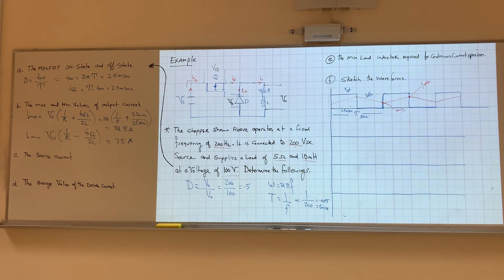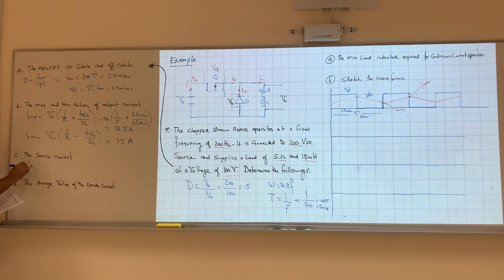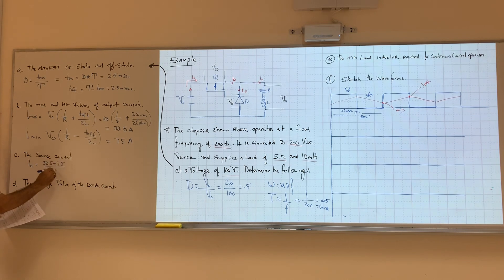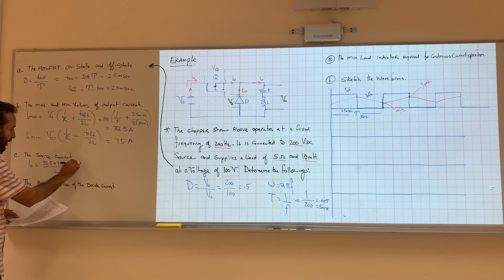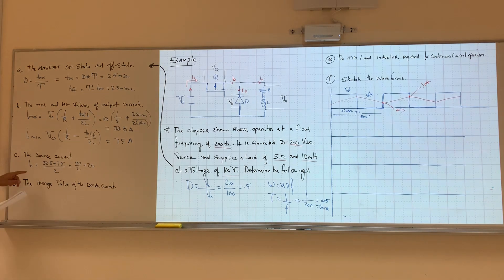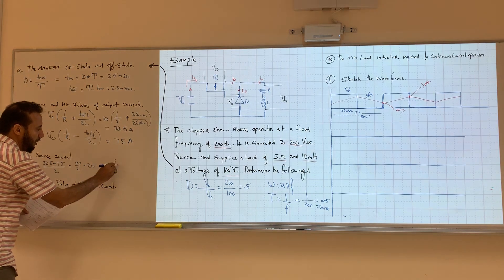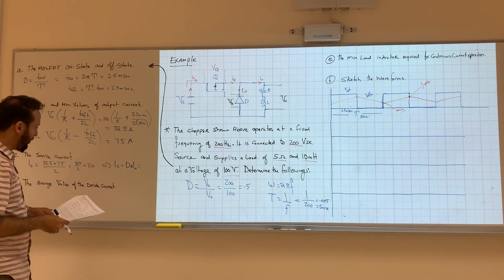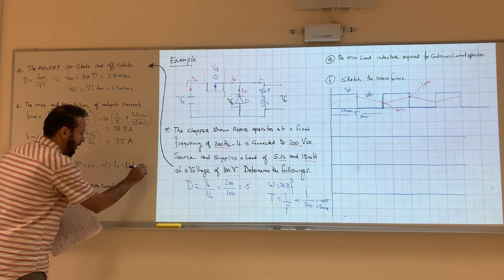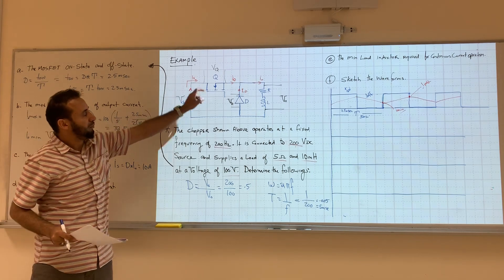Then we find the source current. First, find the average I_out: (32.5 + 7.5) / 2 = 40 / 2 = 20 A. That's the average I_out. To find I_source in a buck converter, use I_source equals duty cycle times I_out, so 0.5 times 20 equals 10 A. I_source is 10 A.